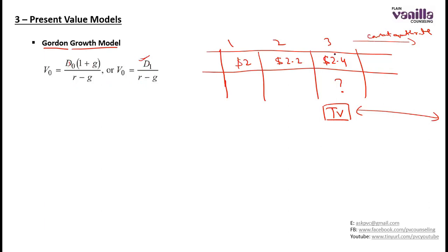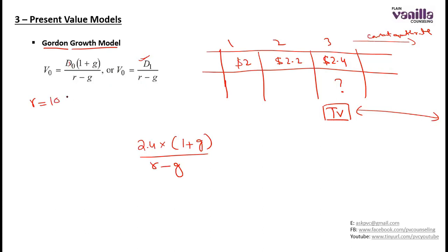So if I am standing at year 3 and estimating the terminal value at year 3, my current year is year 3. I will take 2.4, multiply it by (1 + G), and divide by (R − G). For example, if R, the discount rate, is 10%, then it will be 2.4 × (1 + G) divided by (10% − G). The question then is: what is this G, the sustainable growth rate?